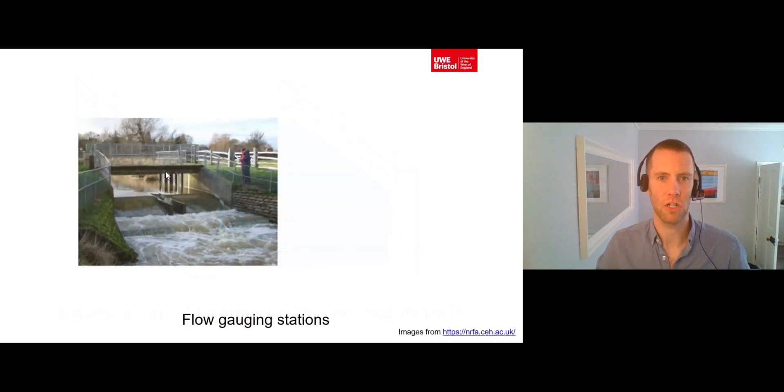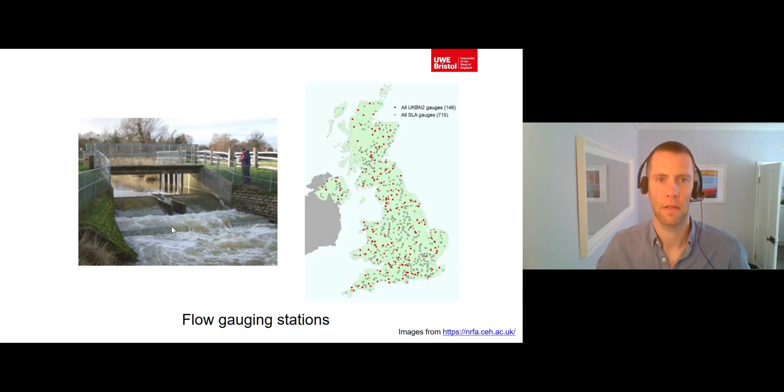Measurement of river discharge is done automatically and continuously at flow gauging stations on rivers like this one. The UK has around 1500 of these flow gauging stations which you can access information about via the National River Flow Archive.